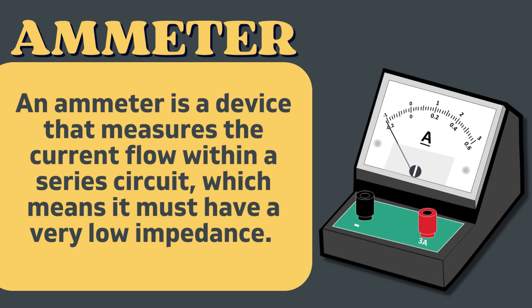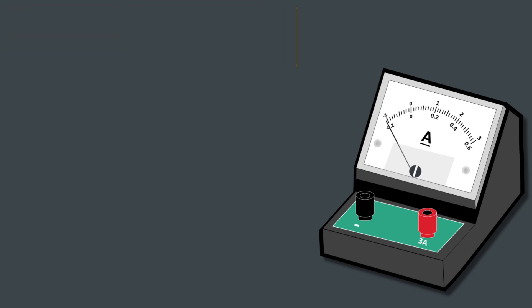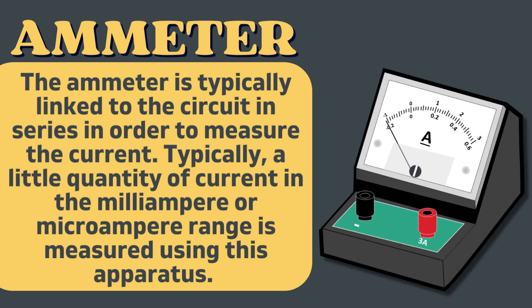An ammeter is a device that measures the current flow within a series circuit, which means it must have a very low impedance. The resistance and inductive reactance of its coils are extremely low because there must be less voltage loss across it. The ammeter is typically linked to the circuit in series in order to measure the current.